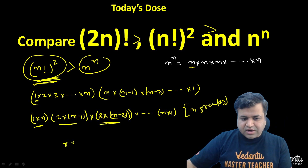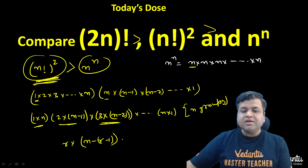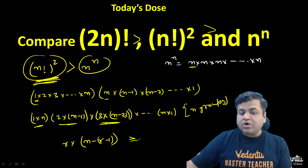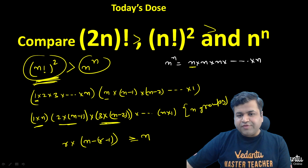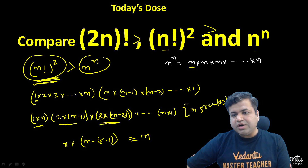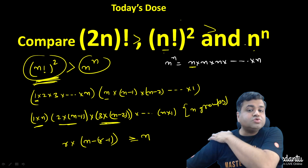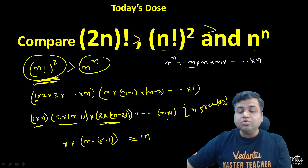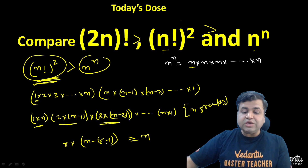The general term is r times (n−r+1). We need to show this is greater than or equal to n to complete the proof. As a check: for n=1, (1!)²=1 and 1^1=1, so equality holds. For n=2, (2!)²=4 and 2²=4, so equality holds again.